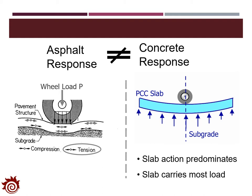The figure shows the response of the pavement structure and subgrade to the load applied on flexible pavement. For the point directly below the tire, compression is applied to the pavement structure. For points before and after the direct contact region, tension is applied to the pavement structure. For the subgrade, the reaction is different: tension is applied directly below the tire, while compression applies at points before and after.